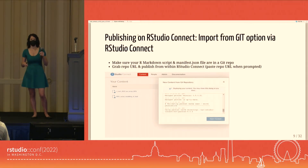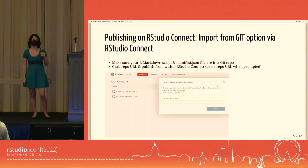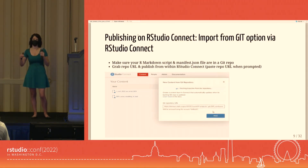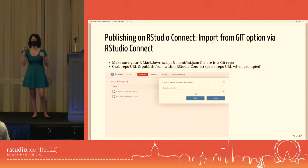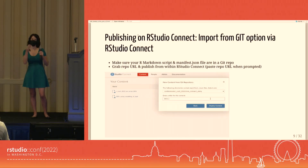One of the things we really liked about the import from Git option was that it not only helped us automate our scripts, but it helped us automate our pipelines. With the check of a button, we could say: anytime we make a change to our Git repository, have that code change auto-flow to the published content.